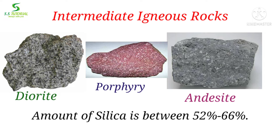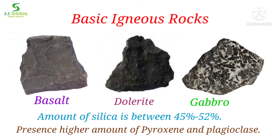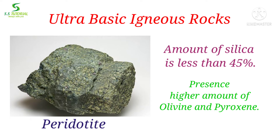Diorite, porphyry, andesite etc. are examples of intermediate igneous rocks. Rocks in which the amount of silica is between 45% to 52% and which present a relatively higher amount of pyroxene and plagioclase are called as basic igneous rocks. Rocks in which the amount of silica is less than 45% and which present a higher amount of olivine and pyroxene are called as ultrabasic igneous rocks. Peridotite is an example of ultrabasic igneous rocks.